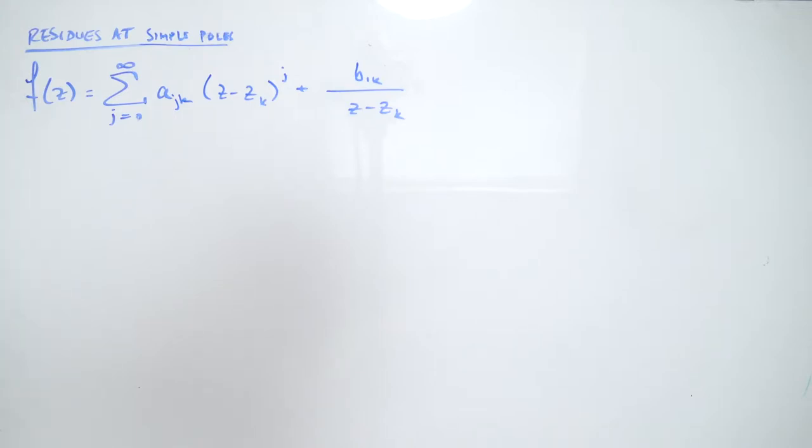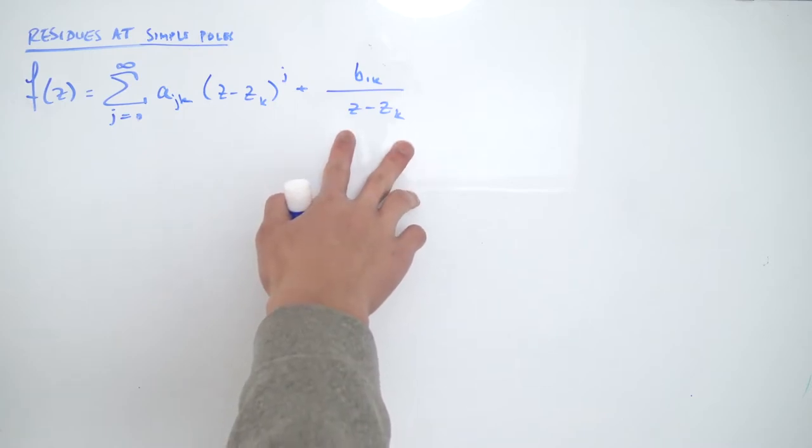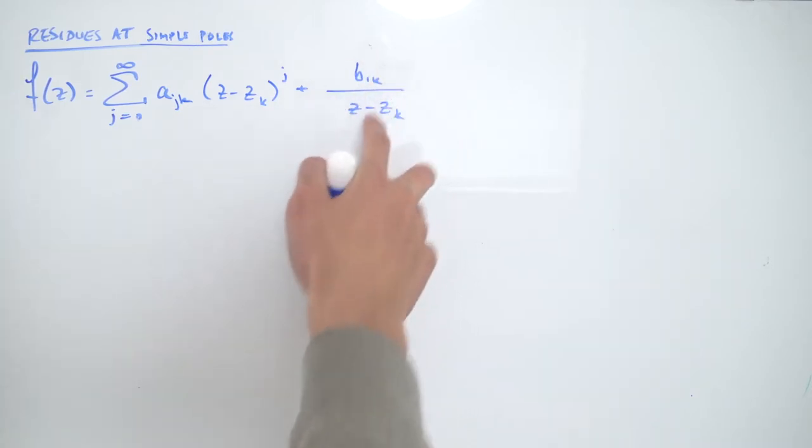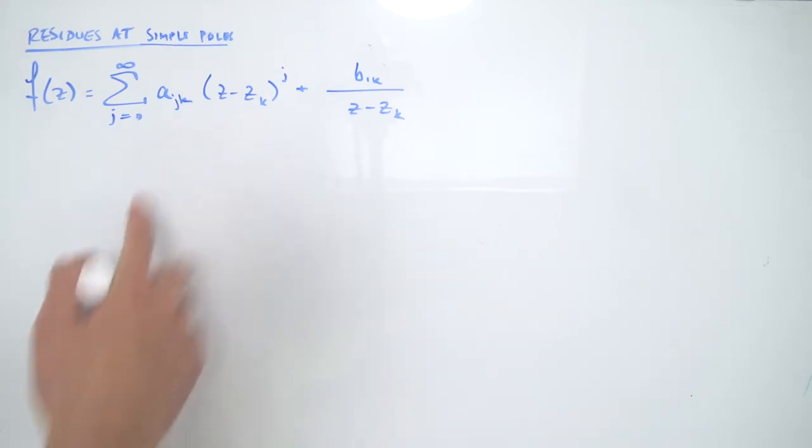So if we consider the Laurent series expansion of our complex function F of Z, if we have a simple pole, that means on our principal part we only have the first term because the degree of this denominator is just one. And of course we still have our analytic part.